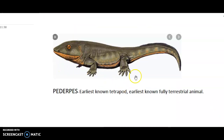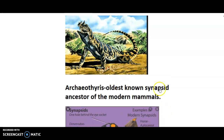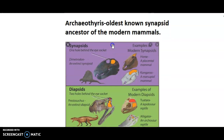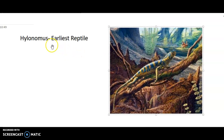Pederpes was the earliest known tetrapod. Archaeothyris was the oldest known synapsid — the ancestor of modern mammals. There is a notable difference between diapsids and synapsids. Hylonomus was the earliest reptile, or earliest amniote. Thank you — that's it for the Carboniferous period. Please like and share.